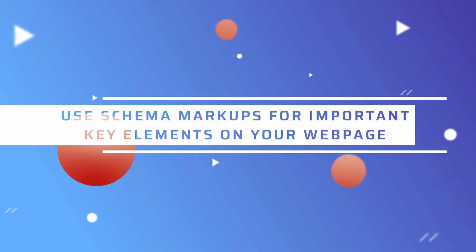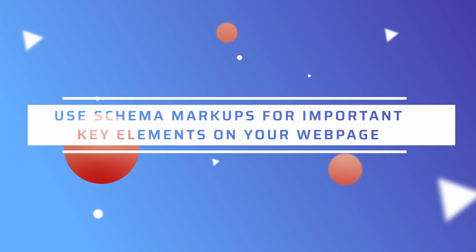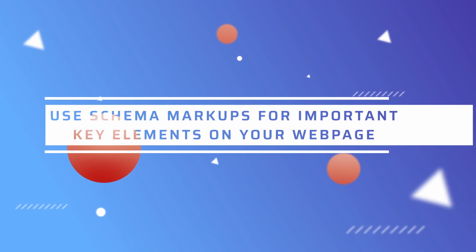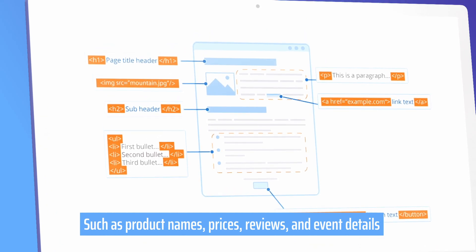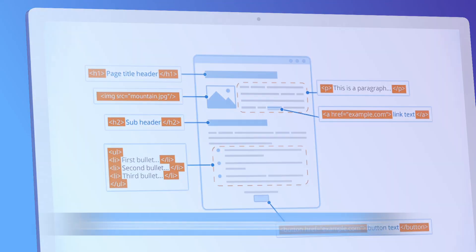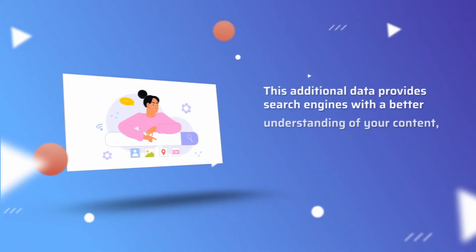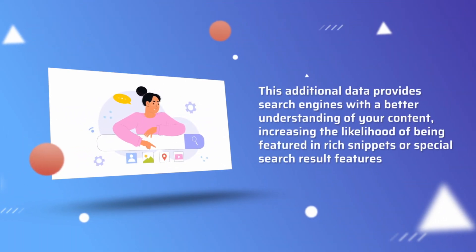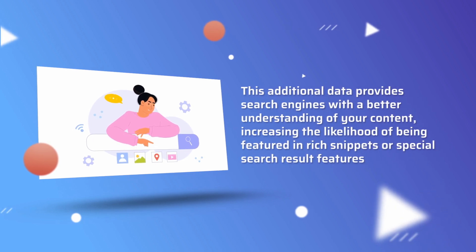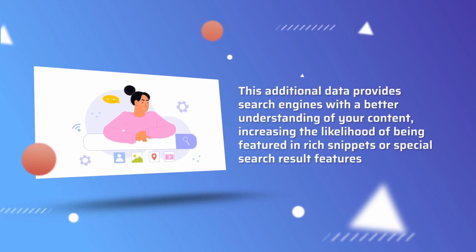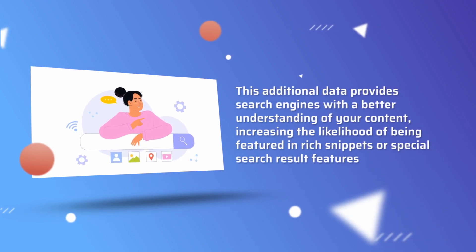Additionally, use schema markup for important key elements on your webpage, such as product names, prices, reviews, and event details. This additional data provides search engines with a better understanding of your content, increasing the likelihood of being featured in rich snippets or special search result features.